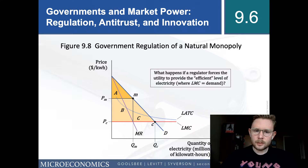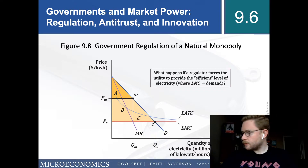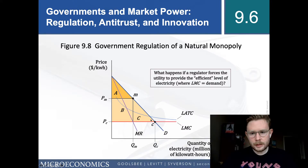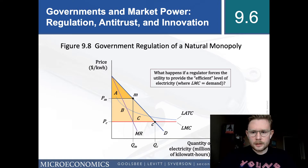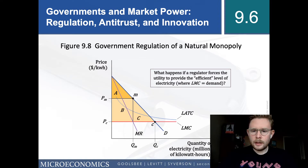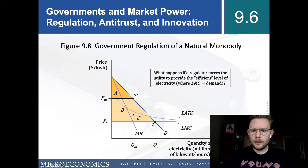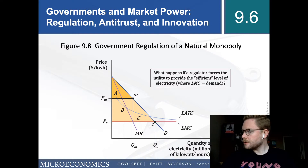What happens if the regulator forces the utility to provide the efficient level of electricity — that is, where long-run marginal cost equals demand? If the government forces the utility to operate at that point, this is effectively a price cap equal to the firm's marginal cost. The firm then produces at a perfectly competitive price and quantity, and consumer surplus expands to cover that entire area.